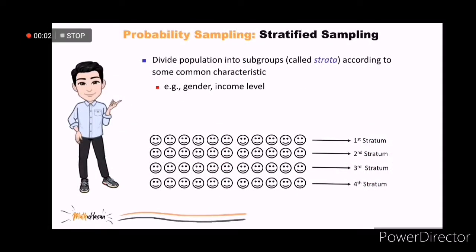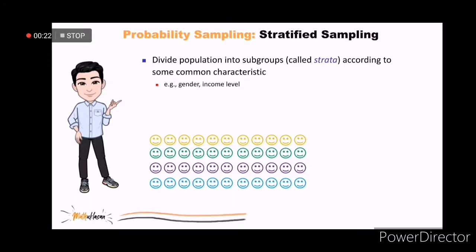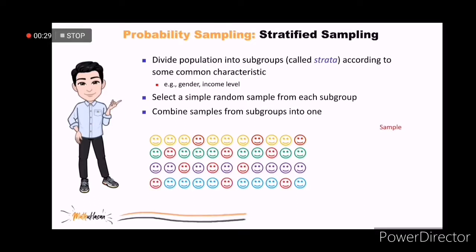The next technique is called stratified sampling. Here, you divide the population first using subgroups according to some characteristic. For instance, you can classify your sample frame by gender and income level. In the example below, let us assume that I divided the sample frame into 4 subgroups. Then, the next step is to select a simple random sample from each subgroup. Finally, combine these samples from subgroups into one as your final sample.